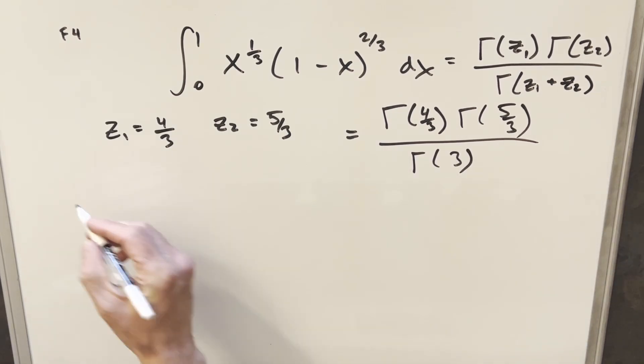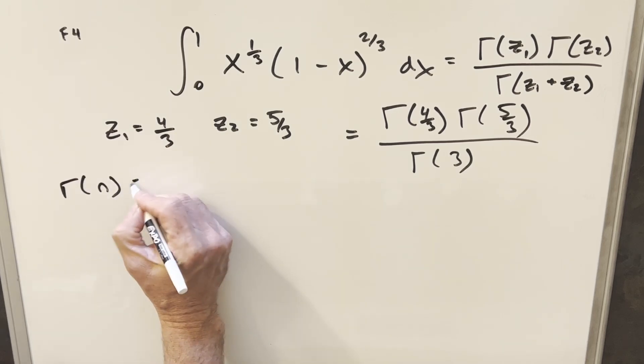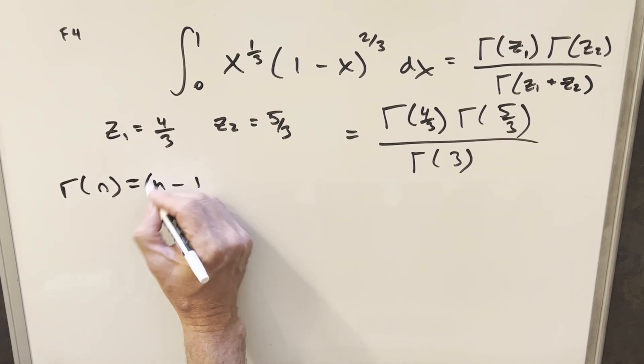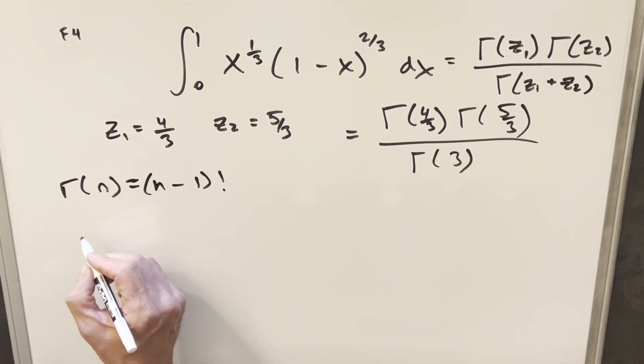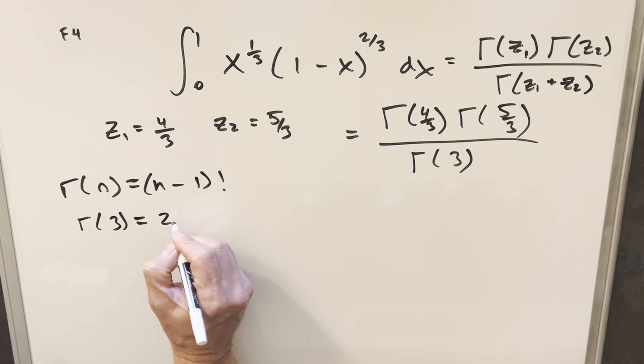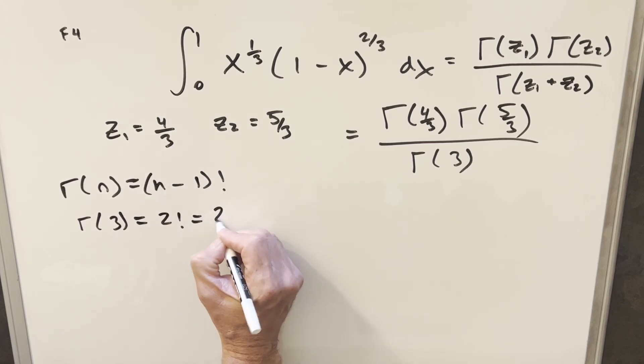And now to calculate this, what we can do is we can use this formula, which is going to allow us to calculate the gamma function in terms of factorials. So we have for gamma of n, it's going to be the same thing as n minus 1 factorial. For example, let's just look at gamma of 3 first. Gamma of 3 is going to be the same thing as n minus 1, 2 factorial, or this value is just going to be 2.